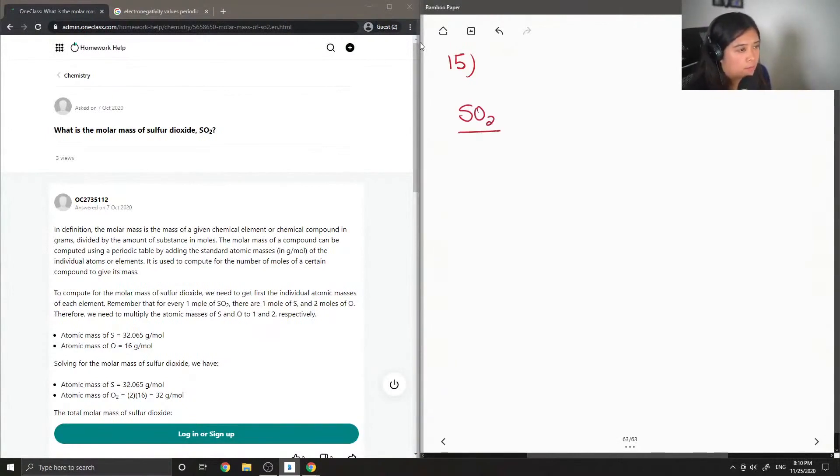So to find the molar mass of sulfur dioxide, we would need the atomic masses of both sulfur and oxygen. These values are just found on your periodic table.